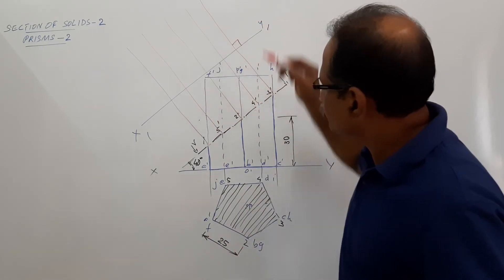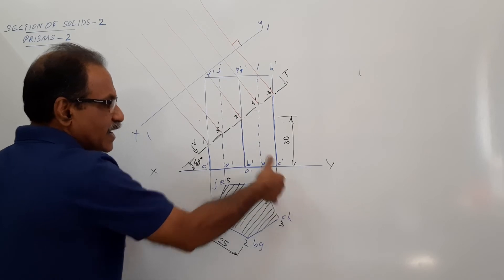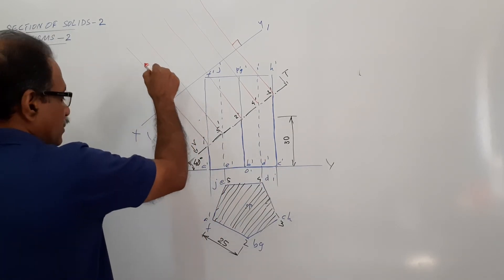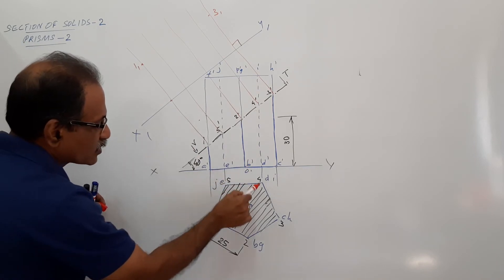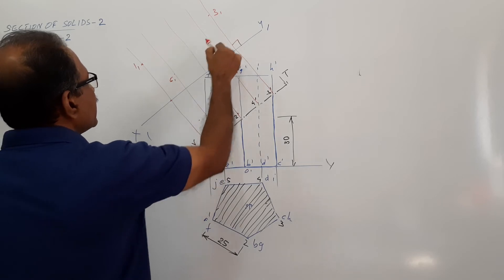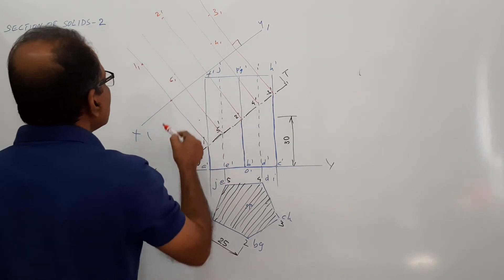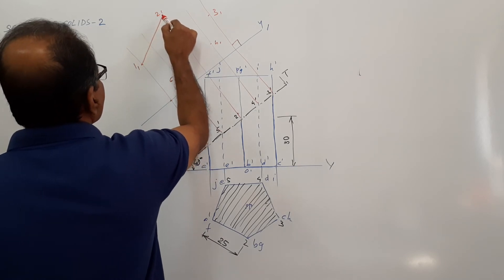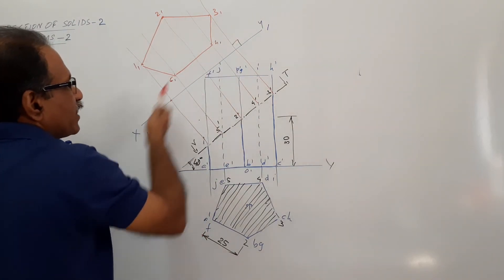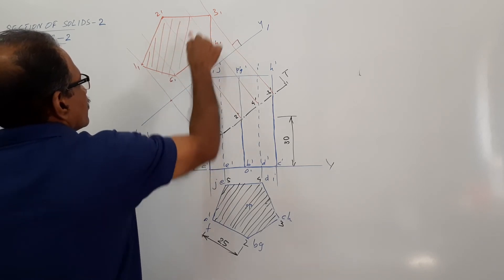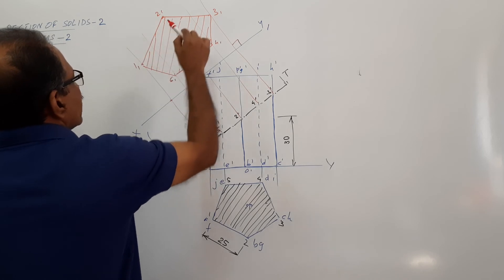Take the distance of point 1 from XY — this distance is the same as point 3 from XY. Take the distance in your compass and on the projector through 1-dash from x1y1, mark that distance — you get 1-1 and 3-1. Take the distance of 5 and 4, mark on the projector through 5-dash to get 5-1 and 4-1. Take the distance of 2 from XY and mark on the projector through 2-dash to get 2-1. Connect them: 1-1, 2-1, 3-1, 4-1, 5-1. Hatch them at 45 degrees — you get the true shape.